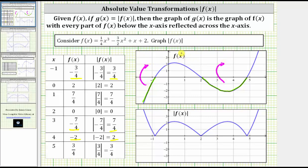Looking at the graph of the absolute value of f of x: if we reflect this piece of the graph across the x-axis, we get this piece of the graph of the absolute value of f of x. And if we reflect this piece of the graph across the x-axis, we get this piece of the graph of the absolute value of f of x. Notice how the graph of the absolute value of f of x will never be below the x-axis, because that's where the function values would be negative. And this is the graph of the absolute value of f of x.